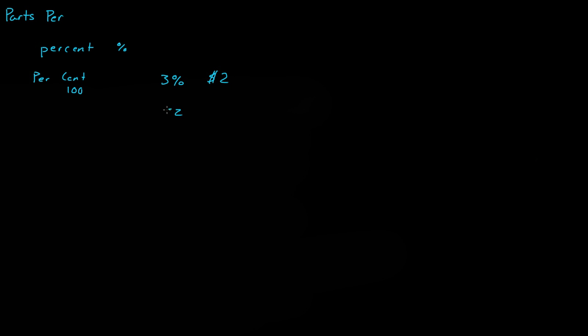For every $2, for every hundred parts of $2, I get back three parts. So I multiply that by three parts. Notice the parts cancel out, and what we end up with is $6 divided by a hundred.